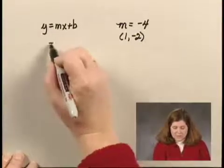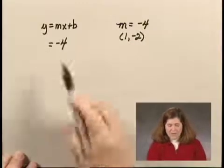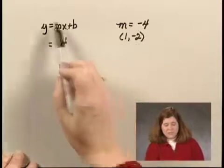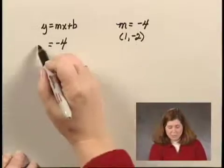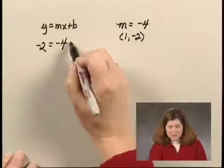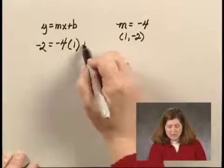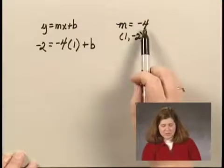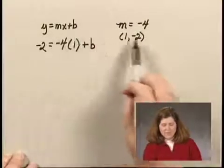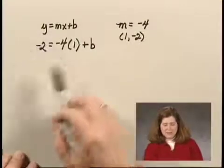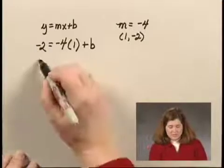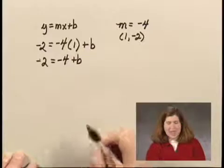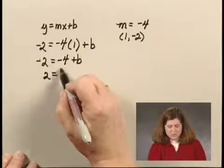We substitute negative 4 for m, and then since the point (1, -2) is on the line, in particular for this case, when y is negative 2 and x is 1, this equation should hold true. So I substitute negative 4 for m, 1 for x, negative 2 for y, and I'm left with just b. This gives me negative 2 equals negative 4 plus b. Adding 4 to both sides, I have 2 equals b.